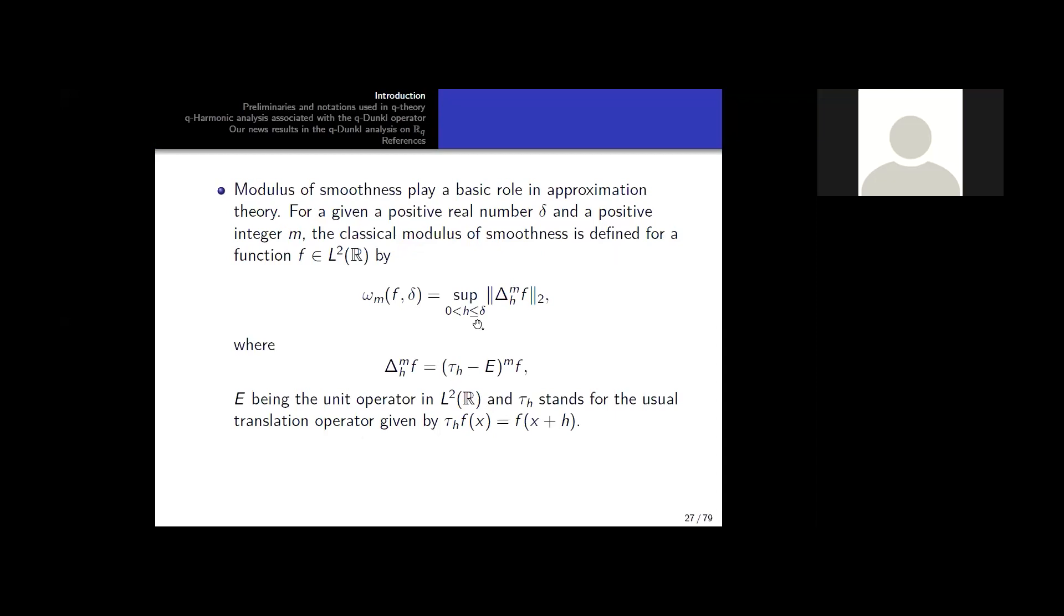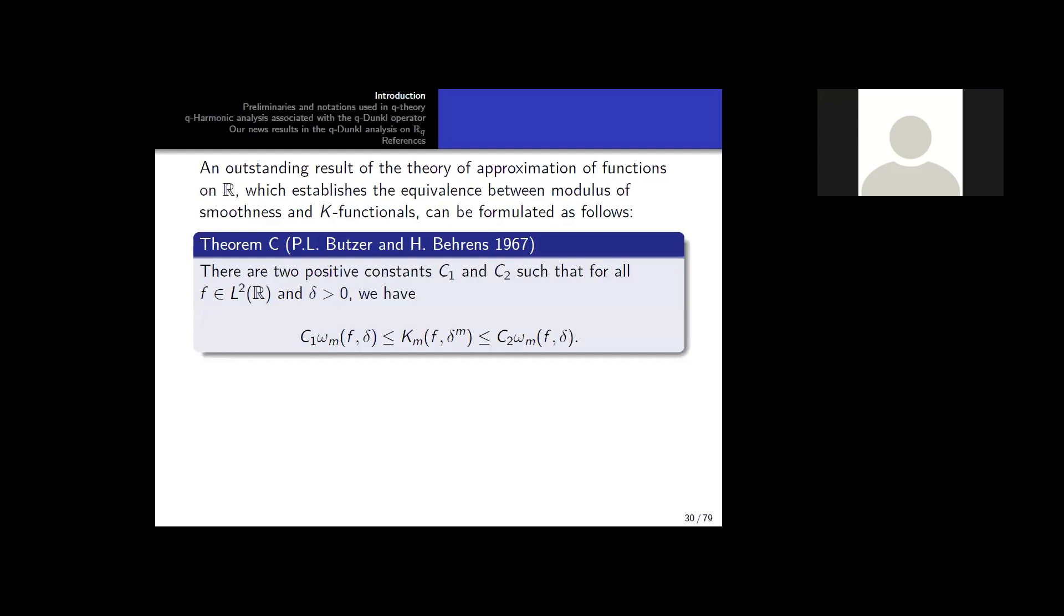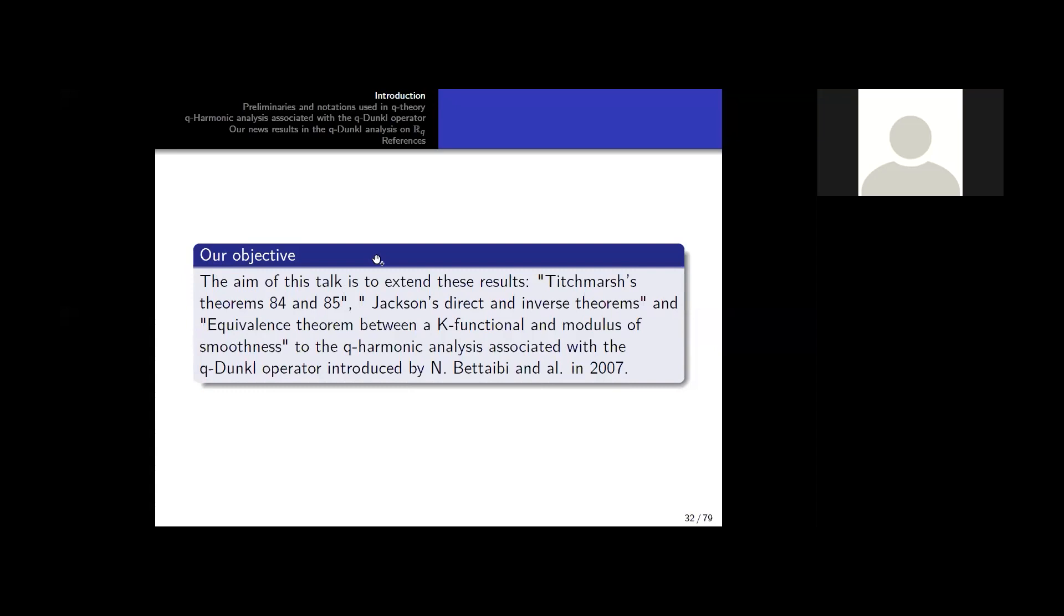We find some classical results here, and there is the classical version. An element of direct and indirect theorems and some K-functional. And in 1967 there was some equivalence between the K-functional of Peetre and modulus of smoothness. Our objective of our talk is to extend all these results: the Titchmarsh theorem, Jackson's direct and indirect theorems, and the equivalence between K-functional and modulus of smoothness to Q-harmonic analysis. This was done in 2007.